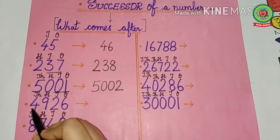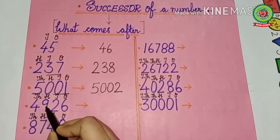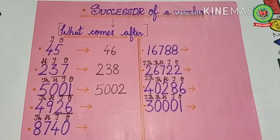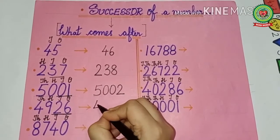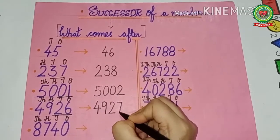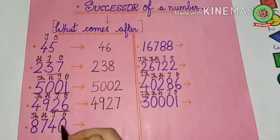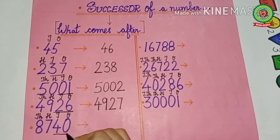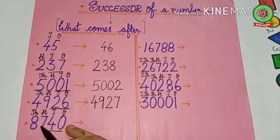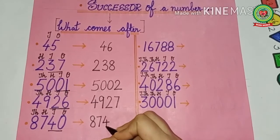Now see the next example: 4926. Take ones and tens together. What comes after 26? That is 27. So thousands and hundreds places remain the same — that is 4 and 9 — giving us 4927. Next number: 8749. Thousands and hundreds place remain the same — that is eight thousand and seven hundred — and 49 becomes 50, so the successor is 8750.